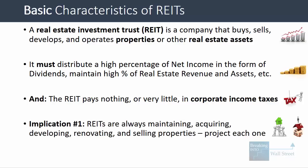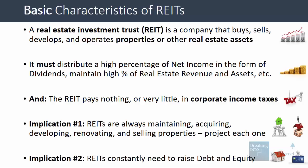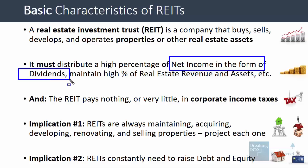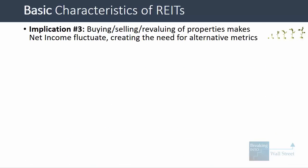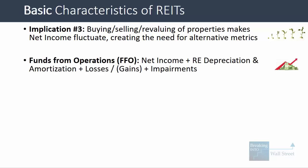REITs are always maintaining, acquiring, developing, renovating, and selling properties, so you have to think about each of those activities when projecting and valuing them. Since REITs distribute so much of their net income as dividends, they can't save up much cash and must constantly raise debt and equity. Buying, selling, and revaluing properties also makes net income fluctuate due to gains and losses, so you have to look at metrics beyond net income. The most important alternative metric is Funds from Operations, or FFO, defined as net income plus real estate depreciation and amortization, plus losses minus gains.